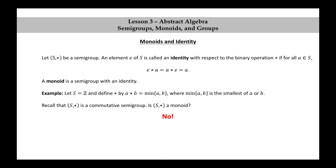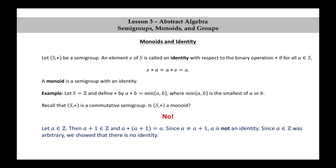Let's prove this. Let A be an integer. Then A plus one is also an integer, and A★(A+1) is equal to A, because A is the smaller of A and A plus one. Since that result A is not equal to A plus one, this shows that A is not an identity. Since the integer A we chose was arbitrary, we showed that there is no identity.